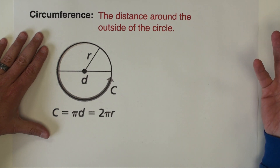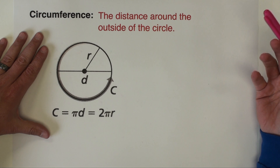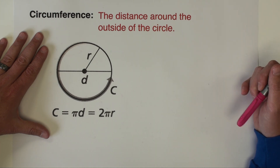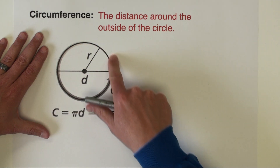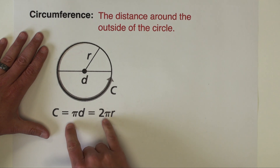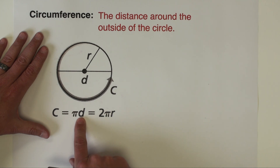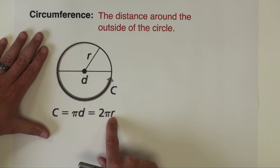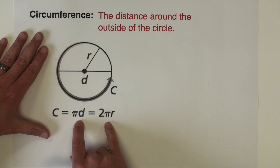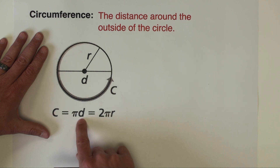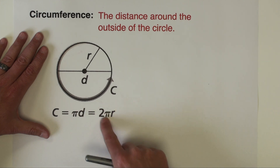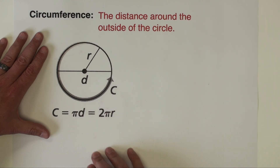Circumference is the term we use to describe the perimeter of a circle — simply the distance around the outside of the circle. There are a couple of different formulas we can use: pi times the diameter, or two times pi times the radius. We can use both because two radii are equivalent to one diameter. So depending on whether you're given diameter or radius, you can choose the appropriate formula.